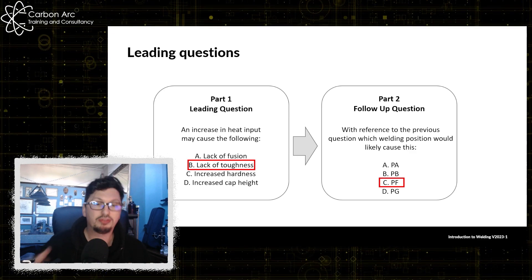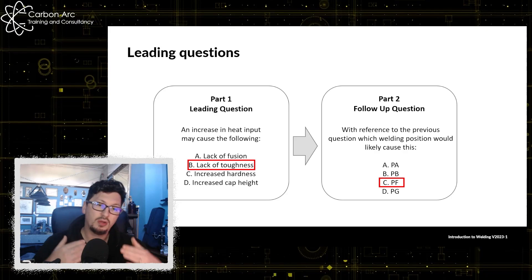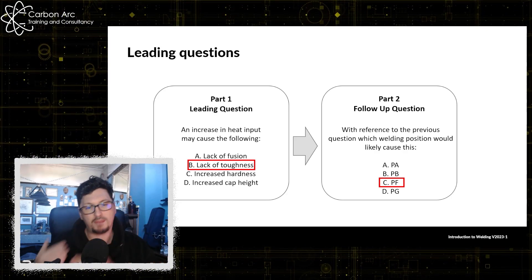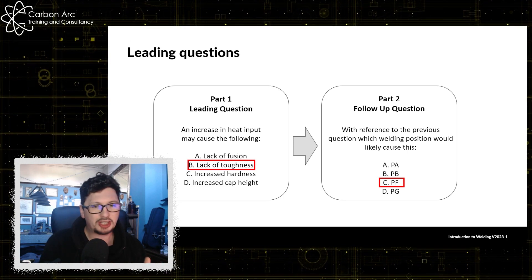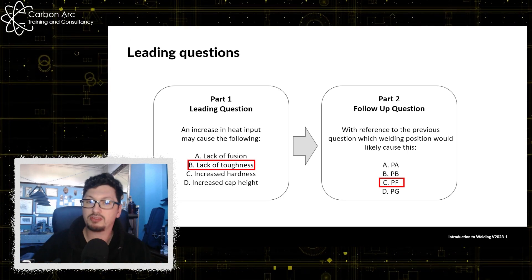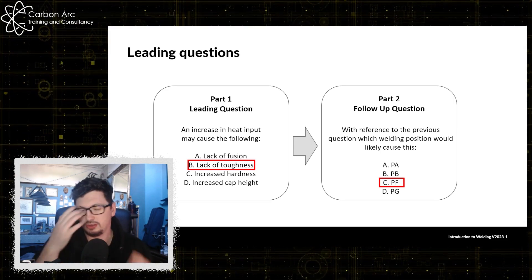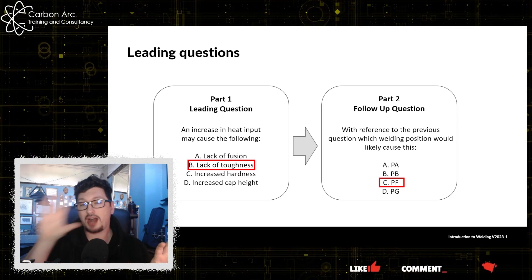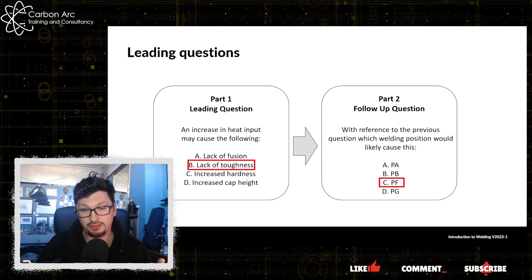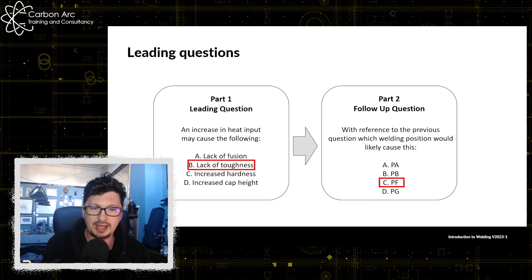So we can tick both and there you go, that's the questions. So you can see how part one is leading into part two. If you get part one incorrect there is a good chance you will also miss the questions for part two. So what this is doing is saying do you know the book answer to part one and then do you know the practical implication of that within part two.